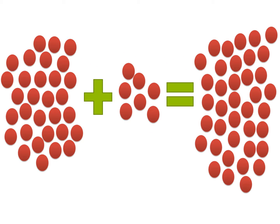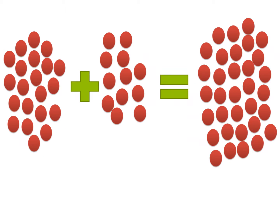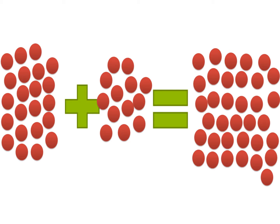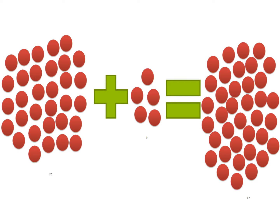31 plus 7 equals 38. 21 plus 12 equals 33. 22 plus 13 equals 35. 32 plus 5 equals 37.